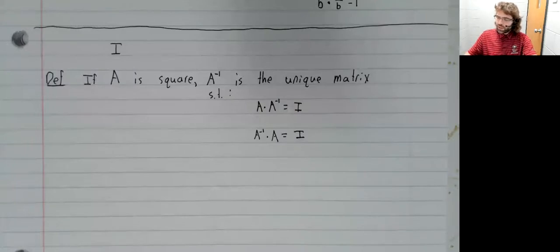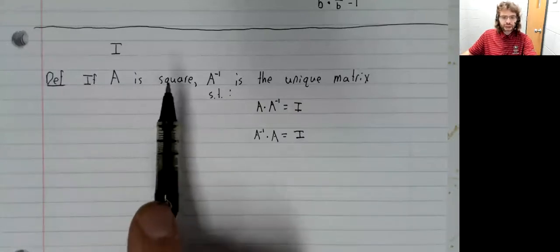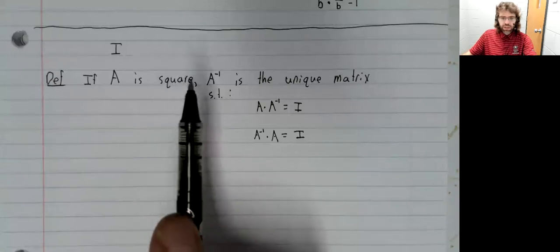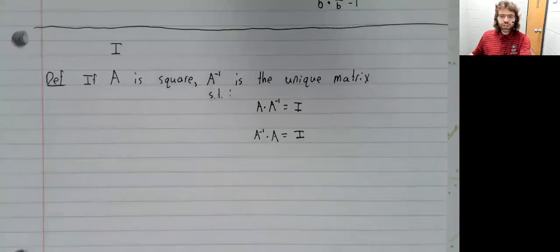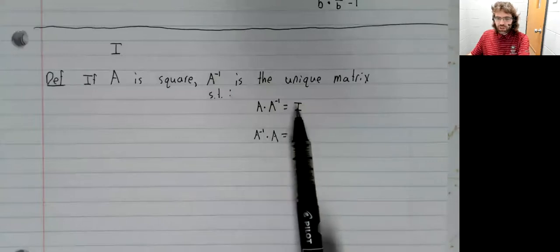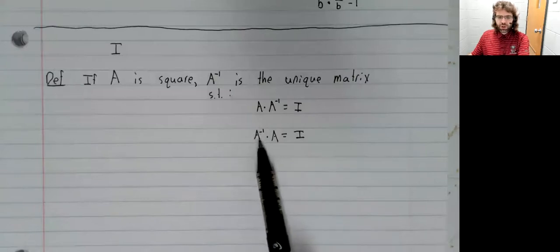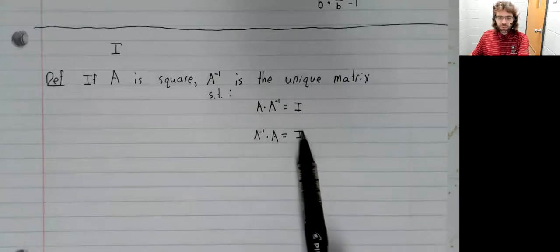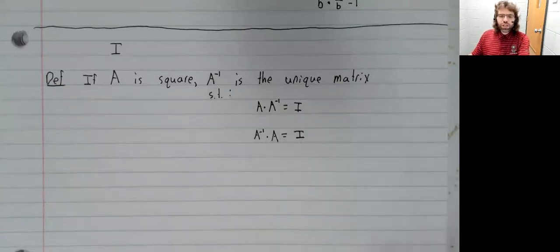Definition: If A is a square matrix, then A inverse is the unique matrix such that A times A inverse equals the identity, and A inverse times A equals the identity. Remember multiplication isn't commutative, so that's why we have these two different statements.